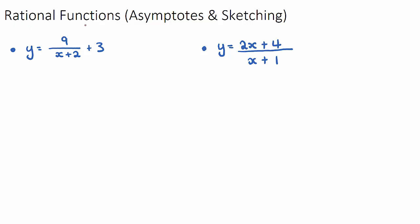In this video we're going to look at rational functions: what they look like, how to find the asymptotes, and how to sketch them. A rational function is a function where we have some sort of division, or X's on the bottom line. If you ever see an X on the denominator of a fraction, it's a rational function. Rational functions have an interesting shape because there are dotted lines called asymptotes where the function doesn't exist.